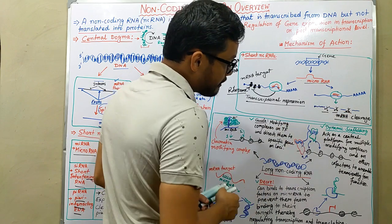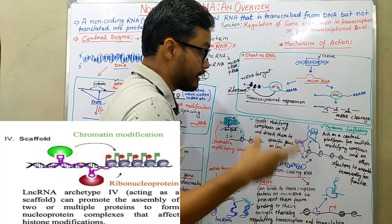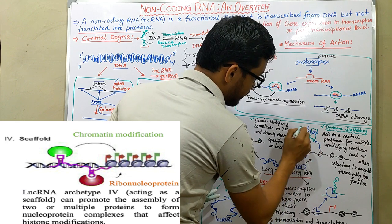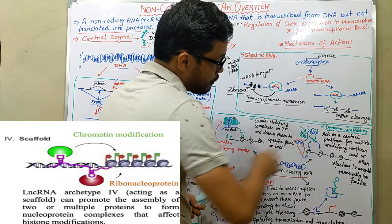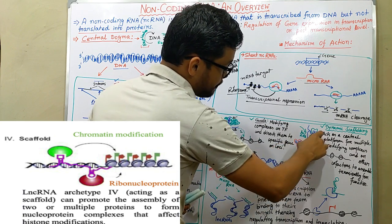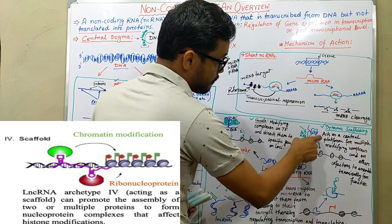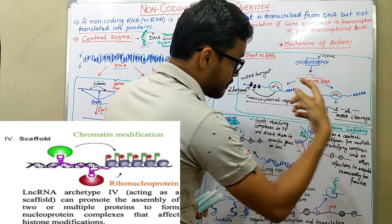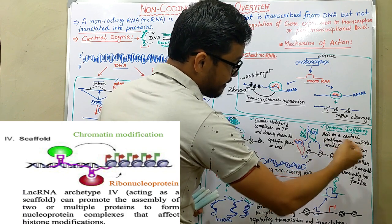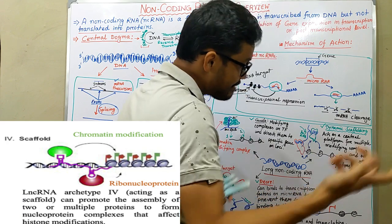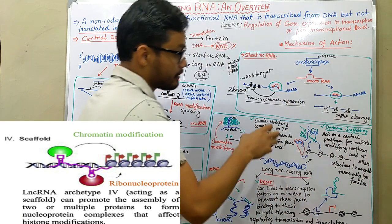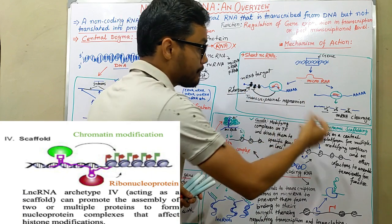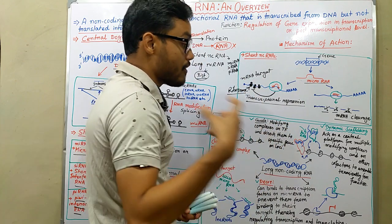In the case of dynamic scaffolding, one or two scaffold proteins are present. The long non-coding RNA — shown in blue — binds with two different proteins, marked in red and green. Thereby it acts as a central platform for multiple modifying complexes and cofactors to assemble transiently for function. It scaffolds between the two proteins and thereby modifies or blocks the function of those complexes.